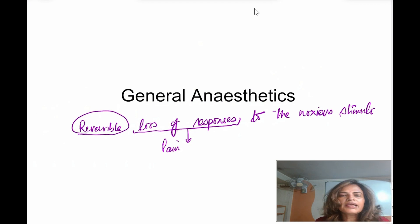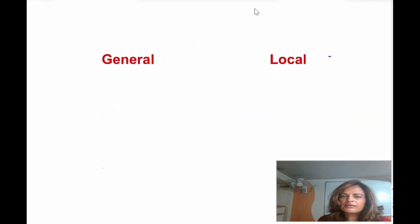Now, this anesthesia can be general or it can be local. General, where the whole body is involved. Local, where a part of the body is involved. General anesthesia we get by giving a general anesthetic, and local anesthesia we get by giving local anesthetics.